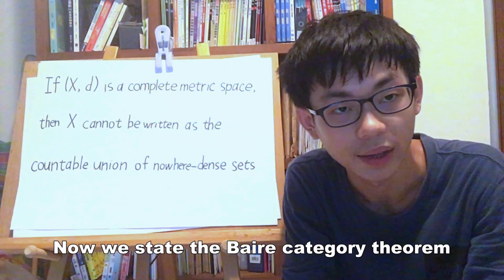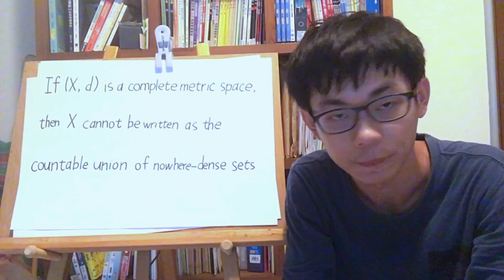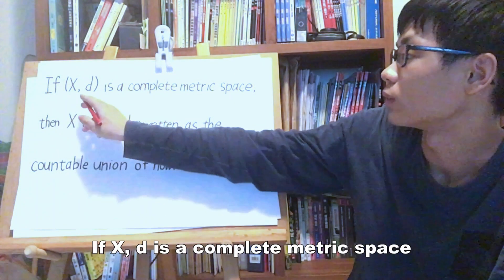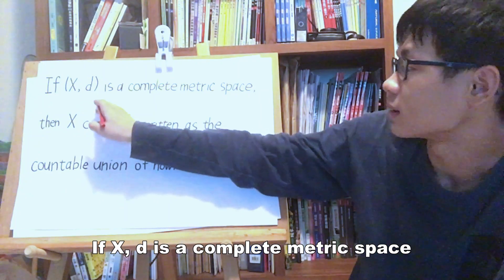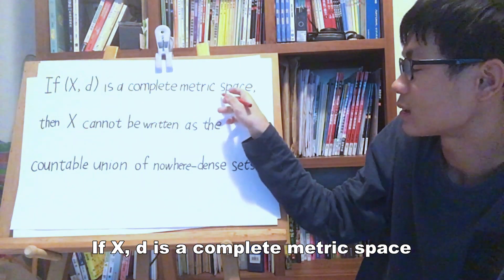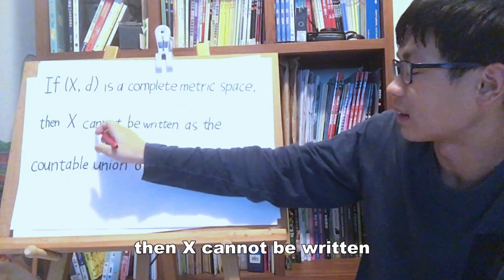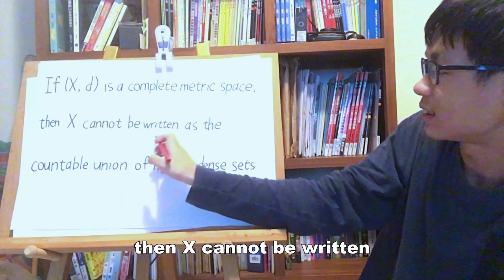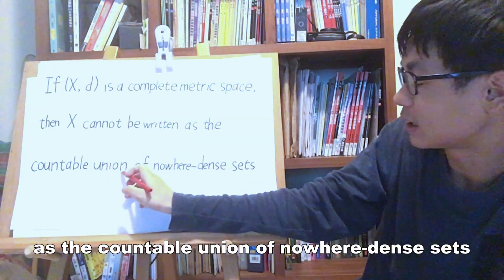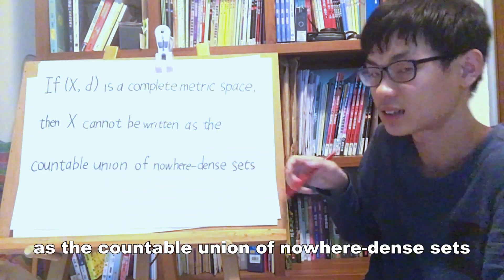Now we state the Baire category theorem. If (X, d) is a complete metric space, then X cannot be written as the countable union of nowhere dense sets.